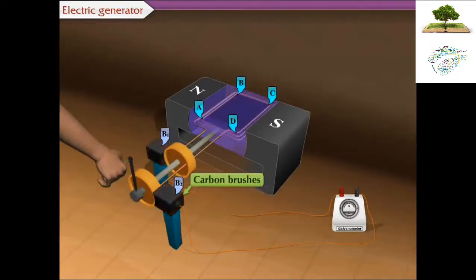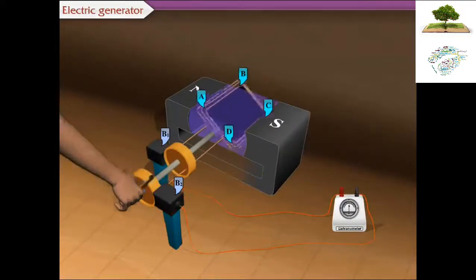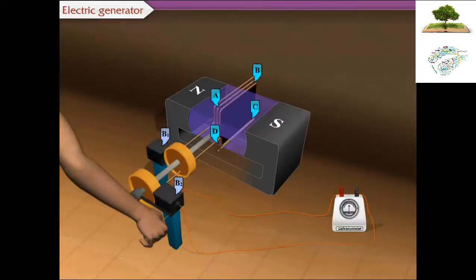These brushes are connected to a galvanometer, which shows the direction of current in the circuit. Upon rotating the axle, the branch AB goes up and the branch CD goes down. That is, the coil ABCD rotates clockwise.